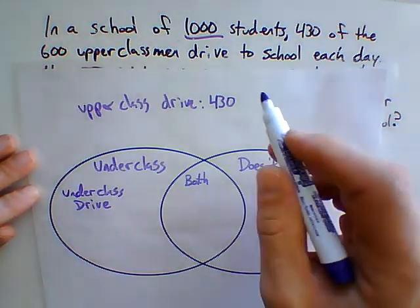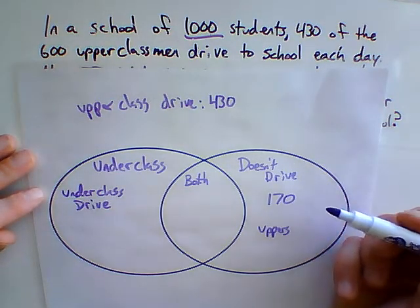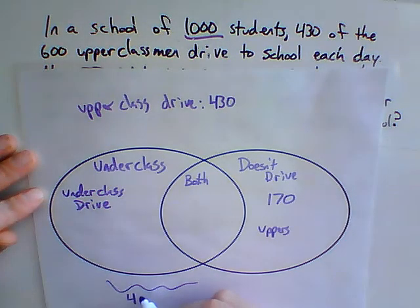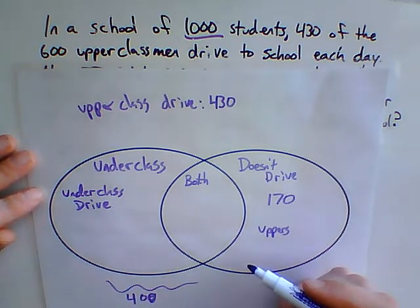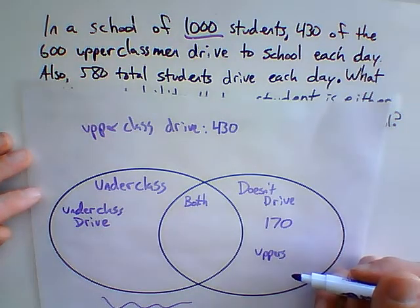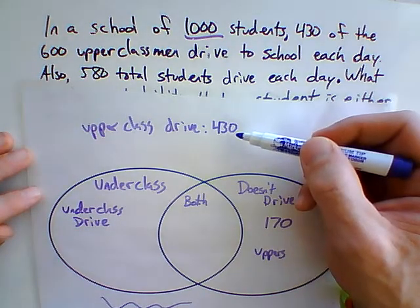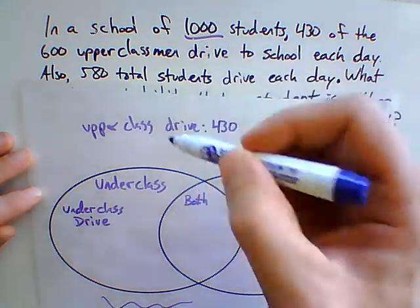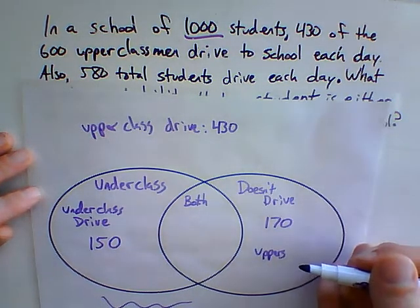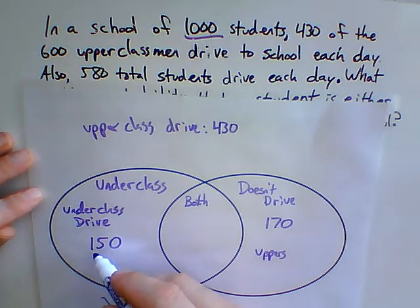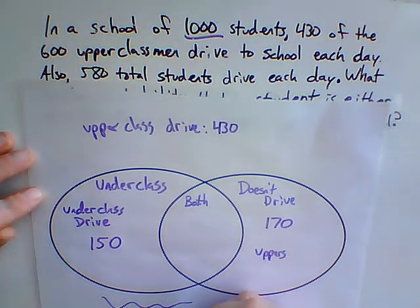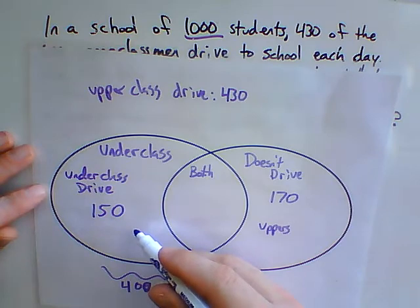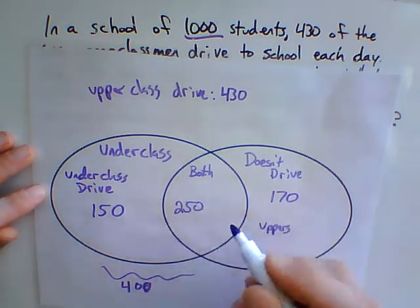There are 600 upperclassmen, which means there are 400 underclassmen. I don't know how they split up yet, but I know there are 400 underclassmen. 580 students drive to school each day — 430 are upperclassmen, and another 150 are underclassmen. 430 and 150 is 580. There are 400 total underclassmen; 150 of them drive, so that means 250 of them do not drive.